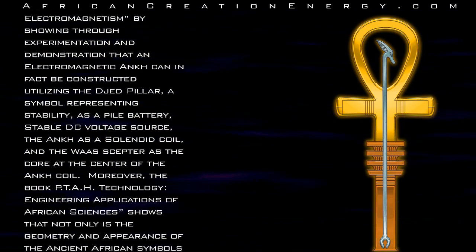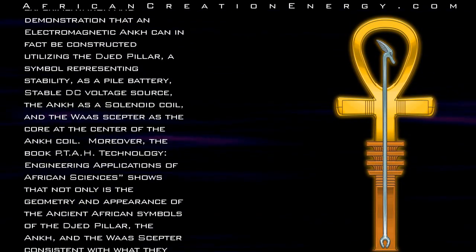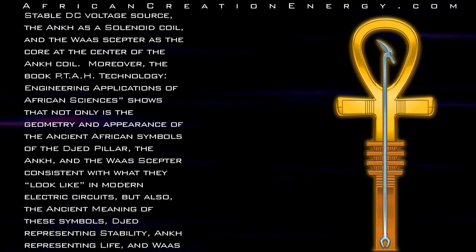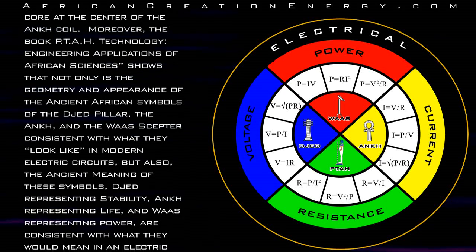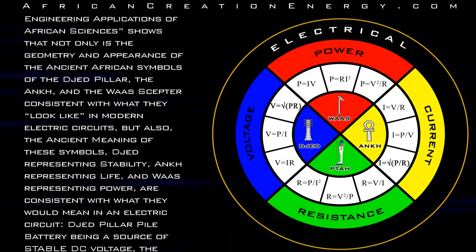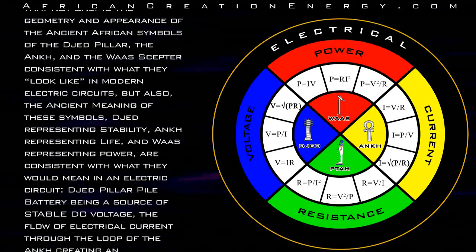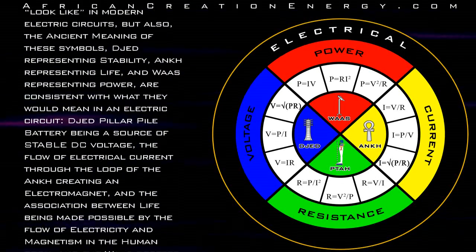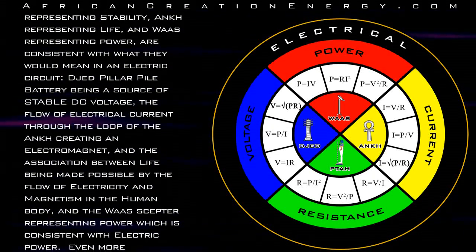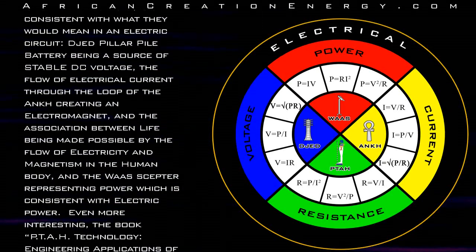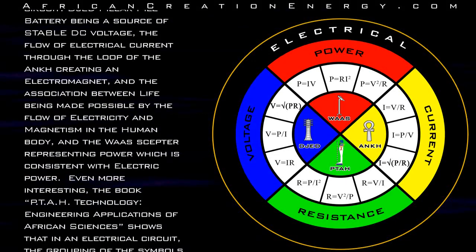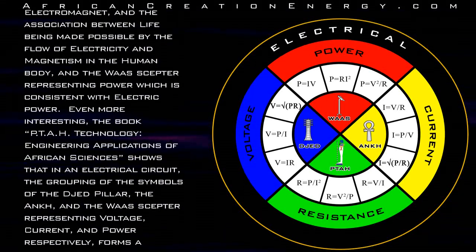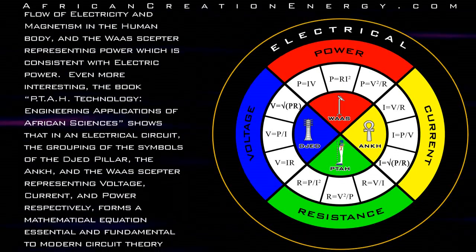Moreover, the book Ta Technology: Engineering Applications of African Sciences shows that not only is the geometry and appearance of the ancient African symbols of the Jed Pillar, the Ankh, and the Was Scepter consistent with what they look like in modern electric circuits, but also the ancient meanings — Jed representing stability, Ankh representing life, and Was Scepter representing power — are consistent with their meaning in an electric circuit: the Jed Pillar battery as a source of stable DC voltage, the flow of electrical current through the loop of the Ankh creating an electromagnet, and the Was Scepter representing electric power. In an electric circuit, the grouping of the Jed Pillar, the Ankh, and the Was Scepter representing voltage, current, and power respectively forms a mathematical equation essential to modern circuit theory known as Ohm's Law.